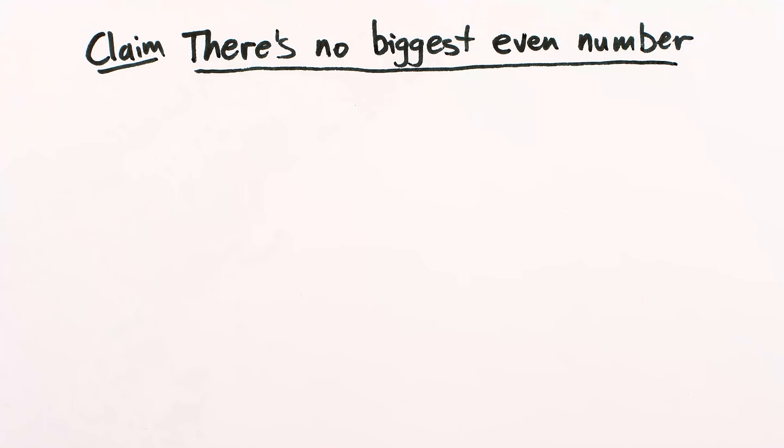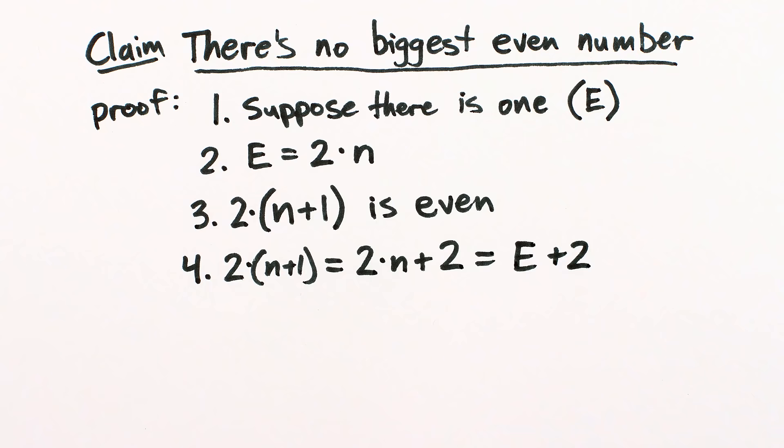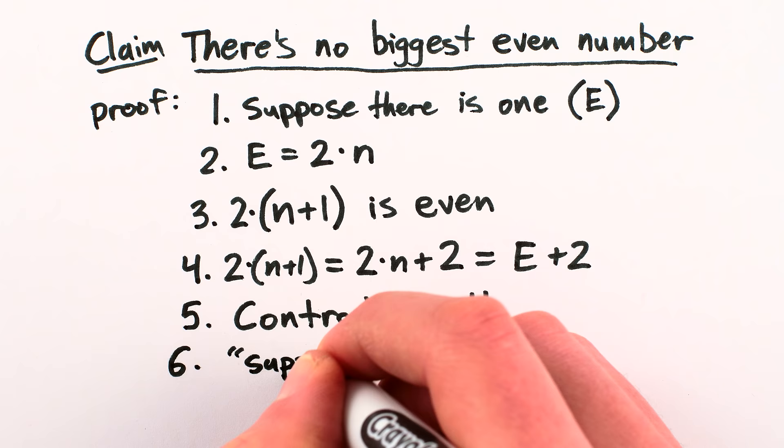Like to prove there's no biggest even number, we'd first suppose there is a biggest even number, call it E, which since it's even is equal to two times some other number. But then if we add one to that other number and multiply by two, we get an even number since it has two as a factor, but this new number is bigger than E, which was supposed to be the biggest even number. This is a contradiction, so our supposition that there is a biggest even number can't be right, so there is no biggest even number.